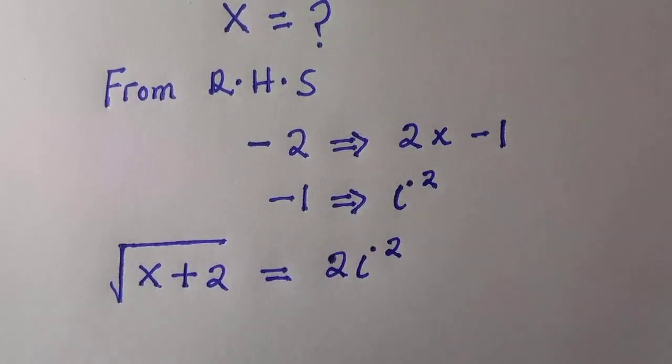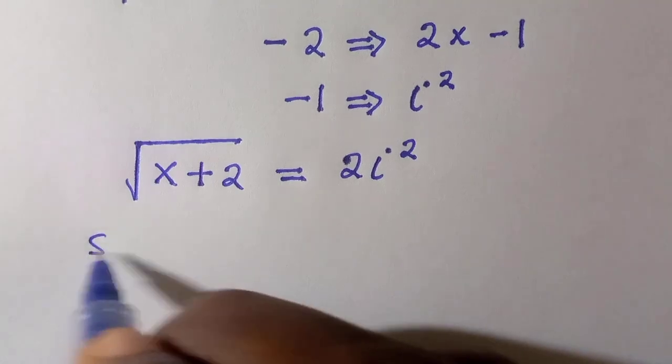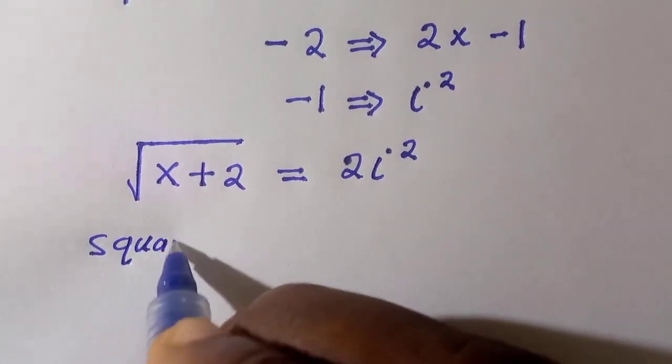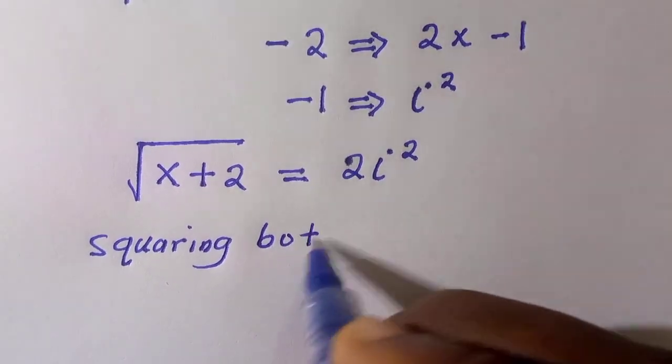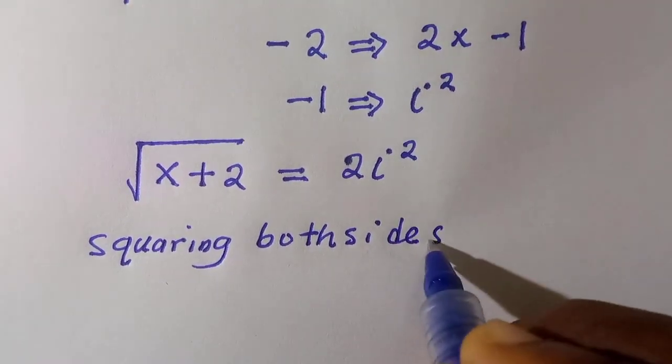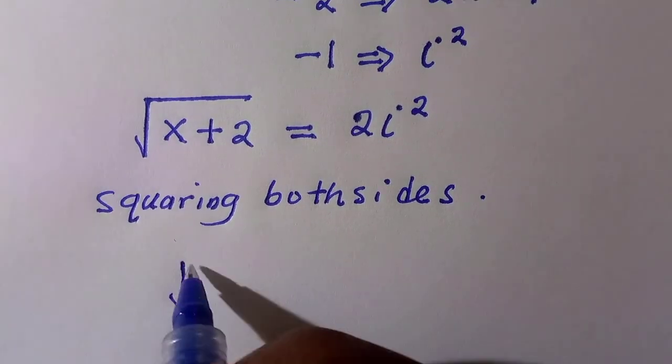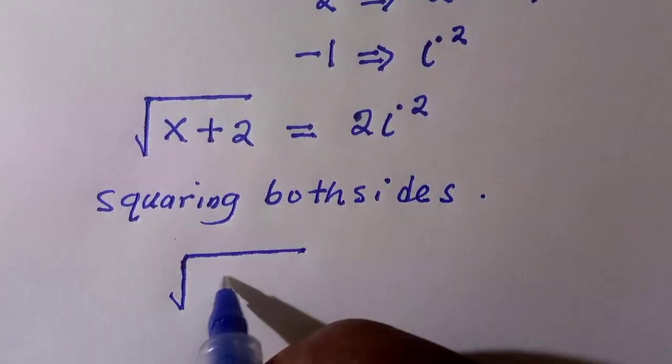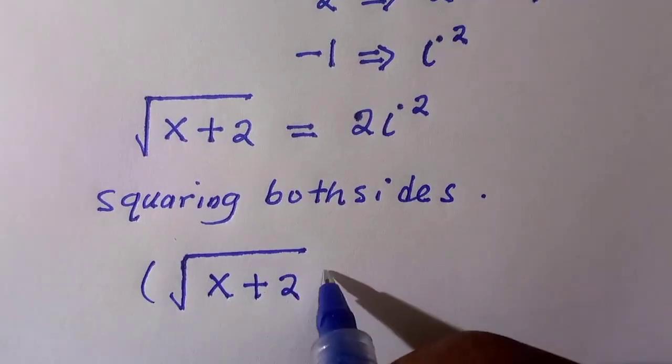The square root of x plus 2 equals—instead of minus 2, we are going to write it as 2i squared. Next, we are going to take the square root of both sides to get rid of the square root.